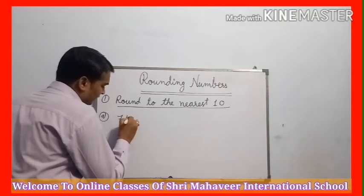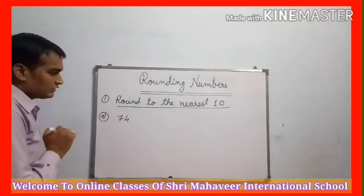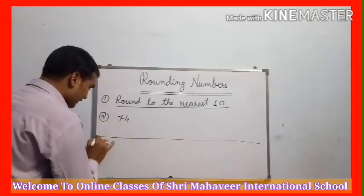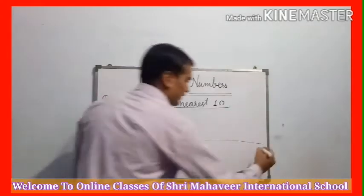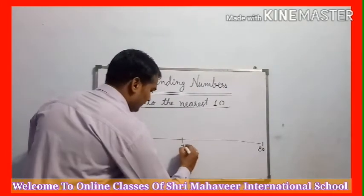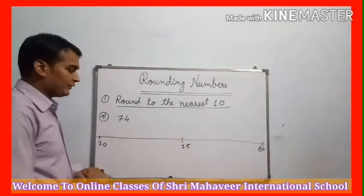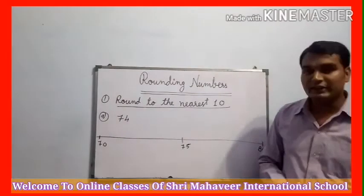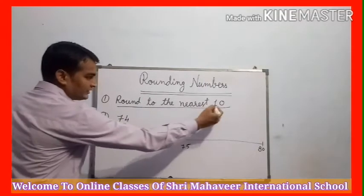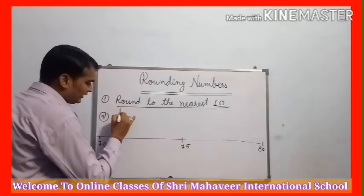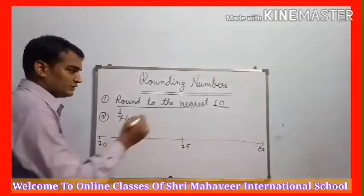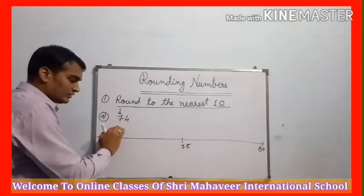मैंने यहां 74 लिखा. अब हम देखते हैं 74 - यहां पर 70 है और यहां पर 80 है. 70 and 80 के between में 75 है. जब कभी भी हम nearest 10 find करते हैं, तो हम places check करते हैं. Nearest 10 means 10s place - तो 10s place से just before देखते हैं. जब nearest 10s निकालते हैं तो 10 से just before वाला number check करते हैं.